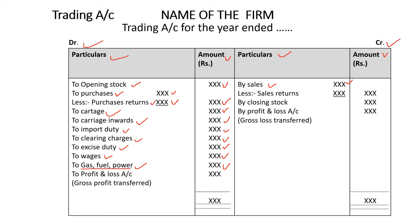On the credit side, we start with sales. In the inner column, write the sales amount. From total sales, deduct sales returns or return inwards — goods returned by the party to whom you sold. So net sales is written in the outer amount column. Then, by closing stock — closing stock is the stock of goods at the end of the trading period.